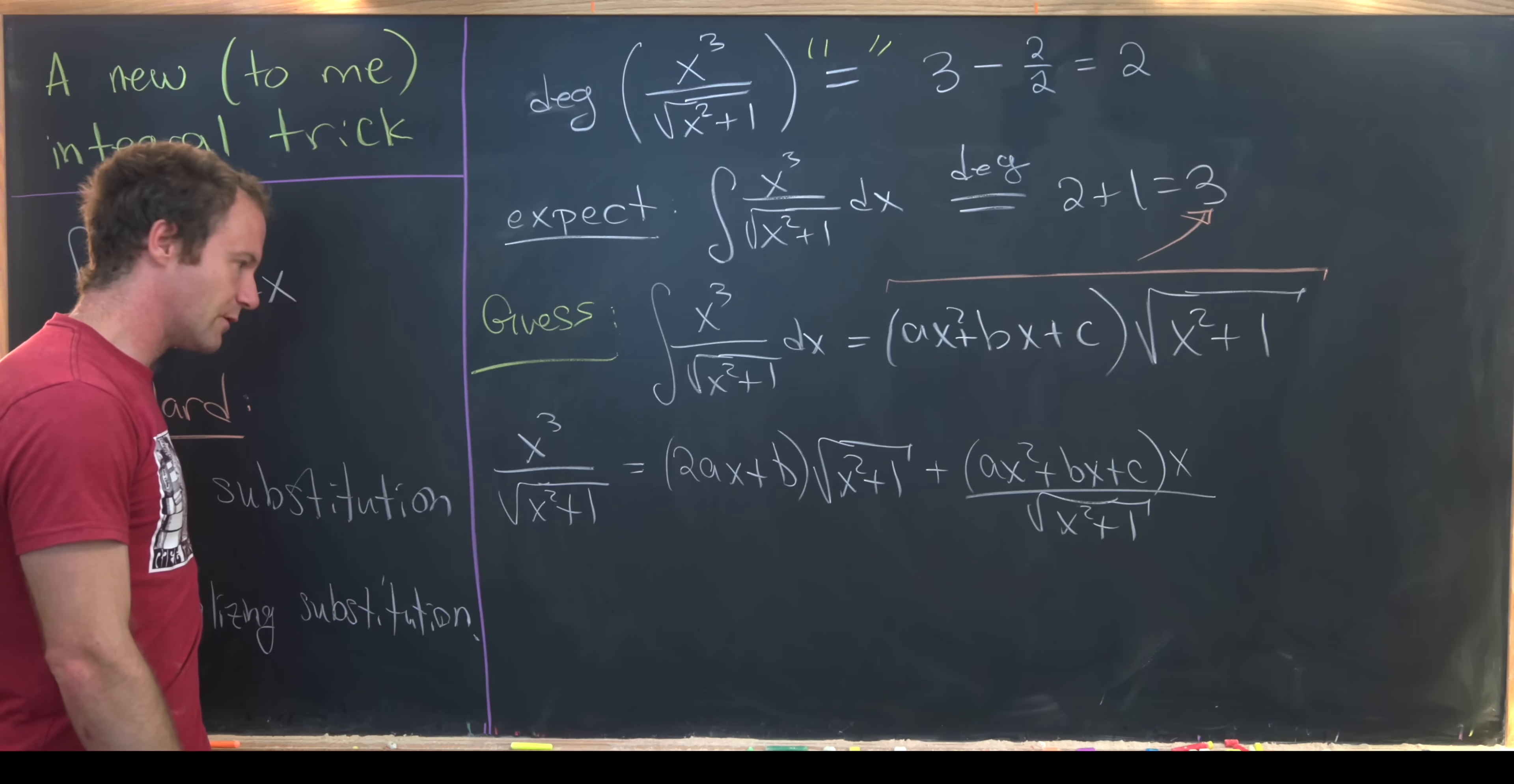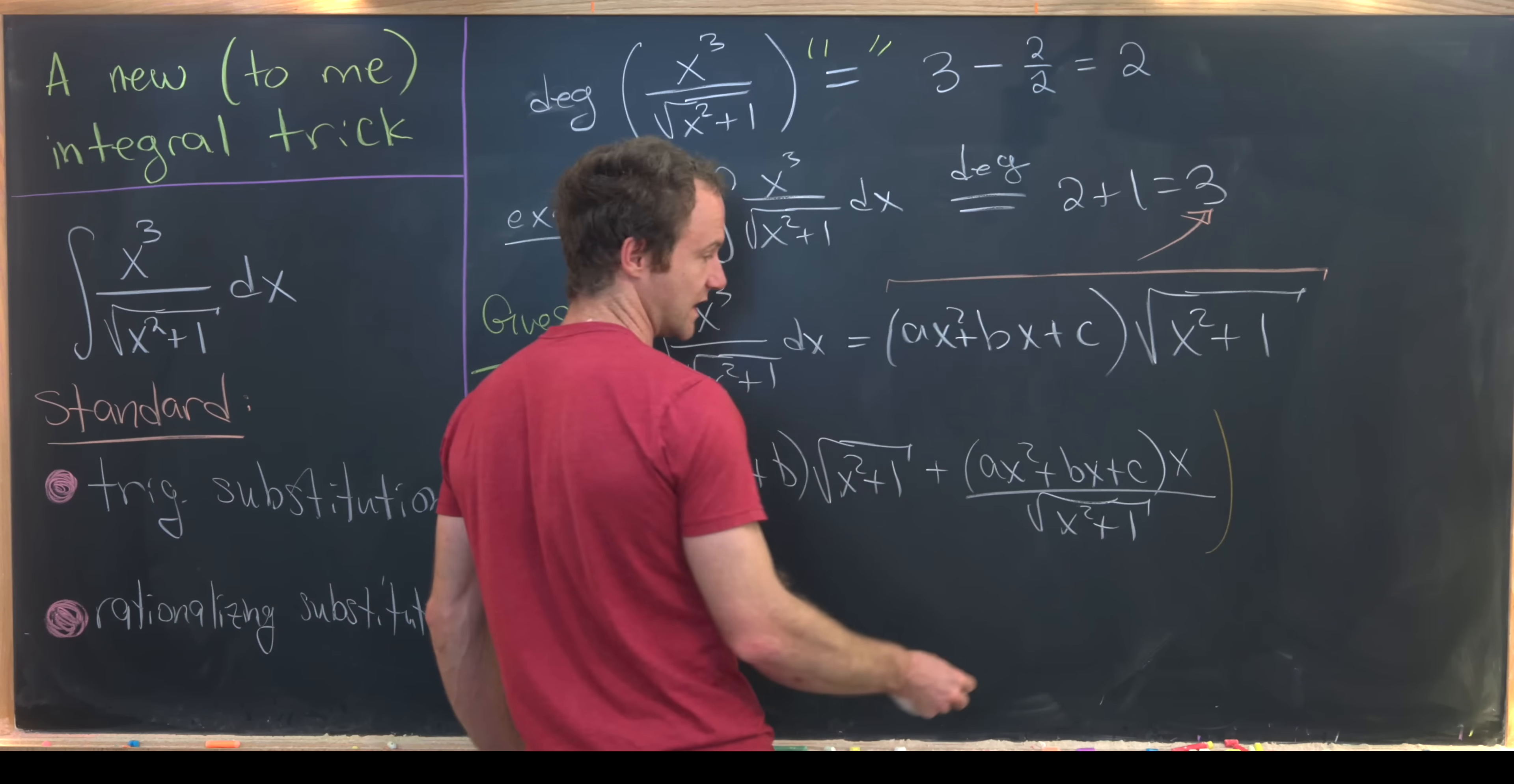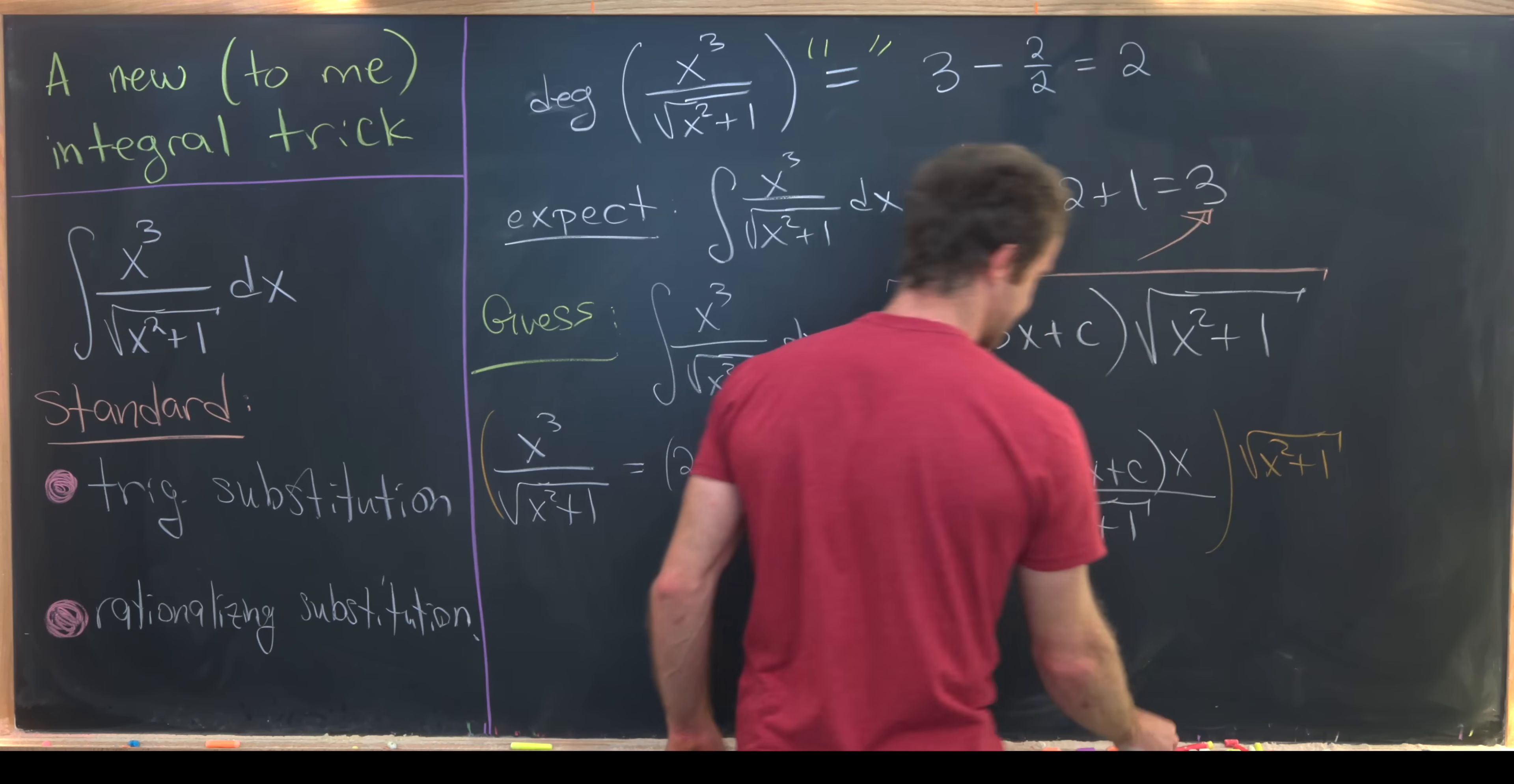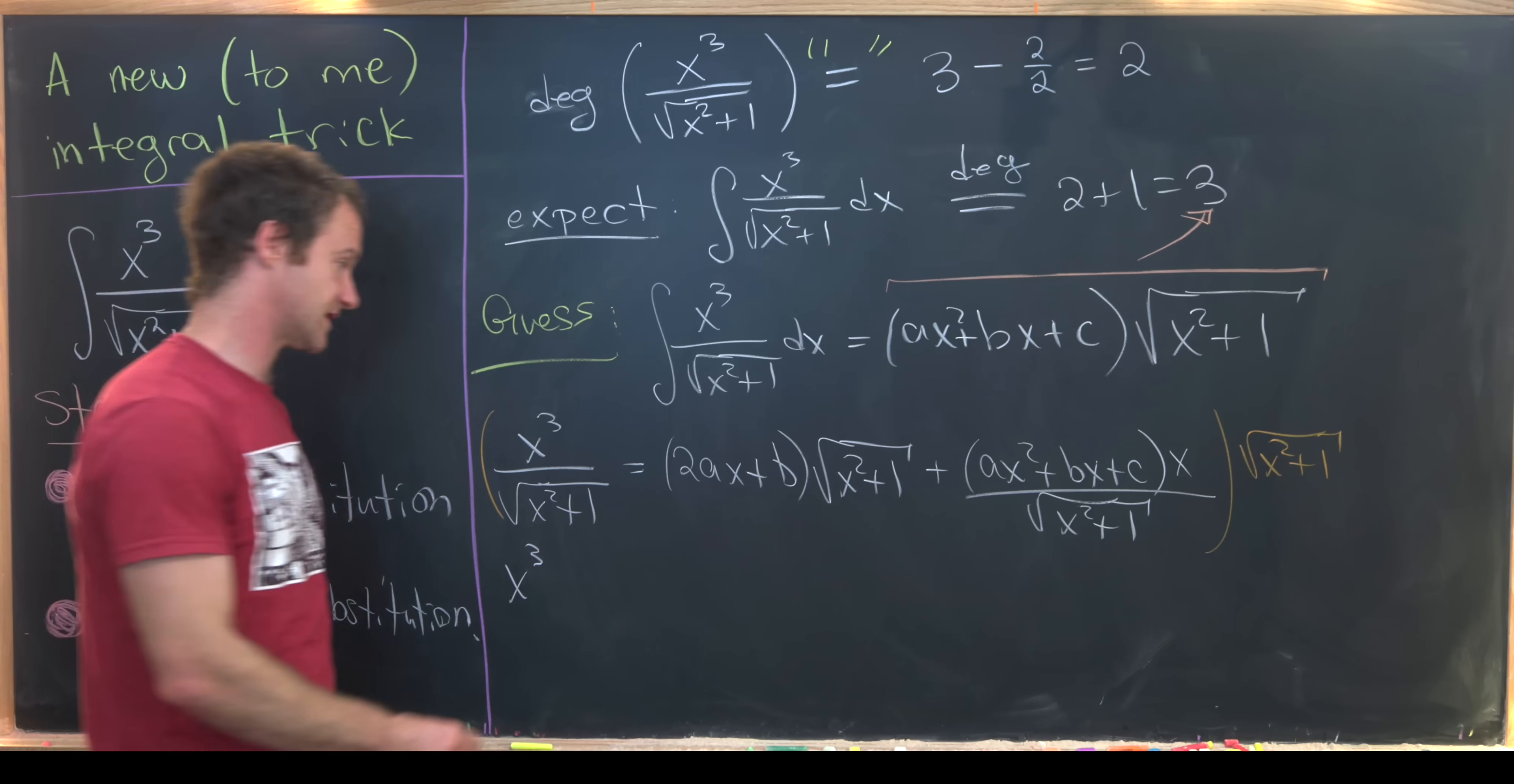Now next, we might want to clear the denominator, which will also put this all in terms of a polynomial equation. We can do that by multiplying both sides or multiplying this entire equation by x squared plus 1. That'll give us x cubed over here on the left-hand side.